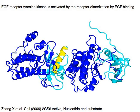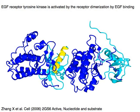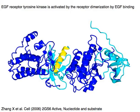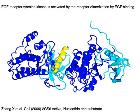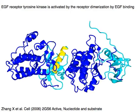EGF receptor tyrosine kinase is activated by receptor dimerization upon EGF binding.